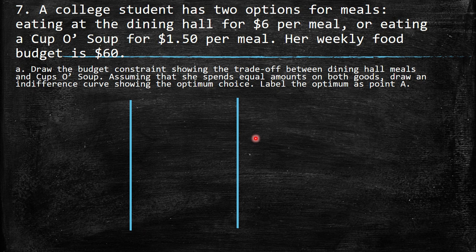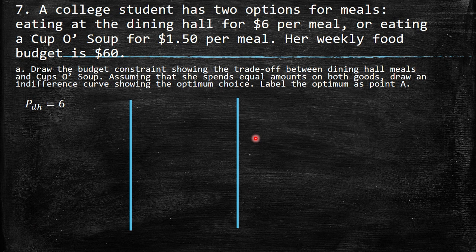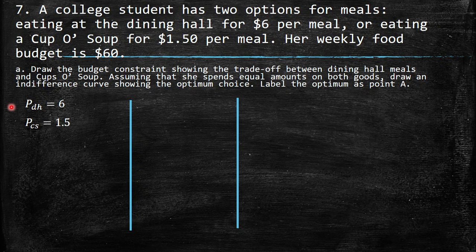The first suggestion is that we need to summarize all the information the exercise provides. So first, we have the price of the dining hall, which is equal to $6 per meal. Then we have the price of cup of soup, which is $1.50. And here the income, which is the budget of $60.